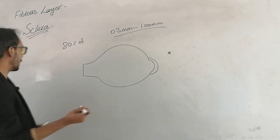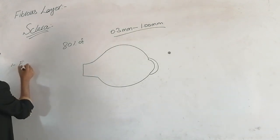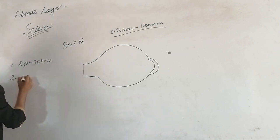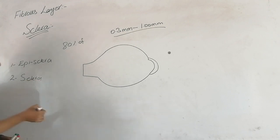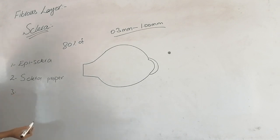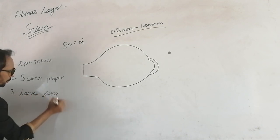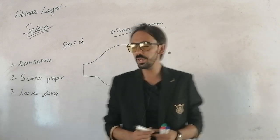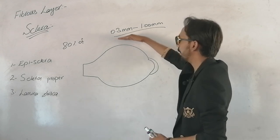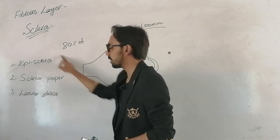Now, if we talk about the different layers of the sclera: the very first layer is the episclera, the second is the sclera itself or sclera proper, and the third layer is the lamina fusca (F-U-S-C-A). Moving from the outermost to the innermost surface, this is the sequence of the layers.